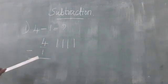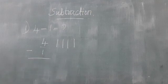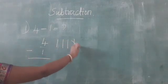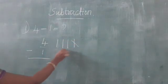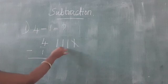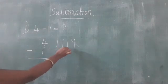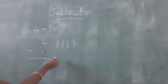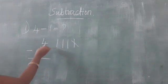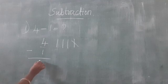So we cut 1 line. So remaining, students count the lines: 1, 2, 3. So 4 minus 1 equals 3.